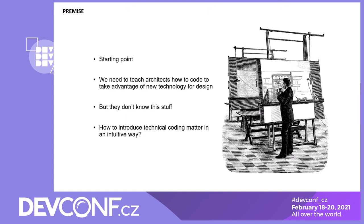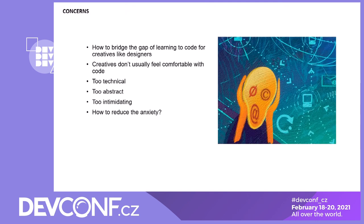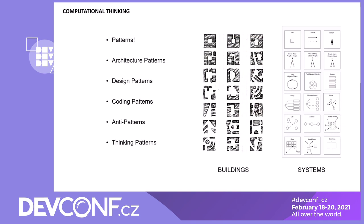So how do we introduce technical coding in an intuitive way so they can use the new tools out there? We want to bridge the gap of coding for creative designers and make them feel comfortable. Otherwise they might think it's too technical, abstract, or intimidating. One way to think about that is patterns. There's an architect named Christopher Alexander who wrote the book on design patterns — originally meant for building architecture but adopted by software and computer architecture. These design patterns, coding patterns, and anti-patterns have a nice crossover between building architects and code architects. So we also want to talk about thinking patterns.